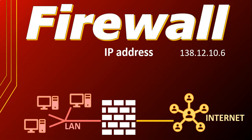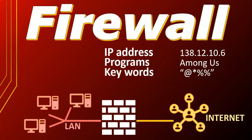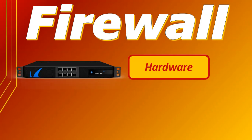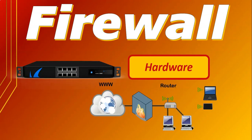You can specify specific programs that can be allowed to access the internet or your own personal network. You can even specify certain keywords, as well as the port that is being used to communicate. Port numbers are specific for certain types of protocols — for example, port 20 is used for FTP, or port 80 is used for HTTP.